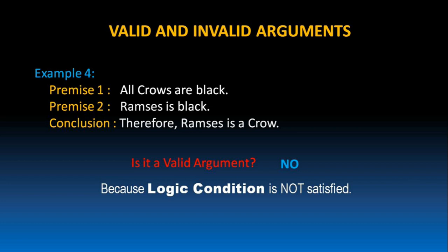Premise 1 says all crows are black, but it doesn't say everything that is black is a crow. If it said everything that is black is a crow, then we could say Ramses is a crow because he is black. But since Premise 1 only says all crows are black, we cannot conclude that Ramses is a crow just because he is black. That is why the logic condition is not satisfied and the argument is an invalid argument.